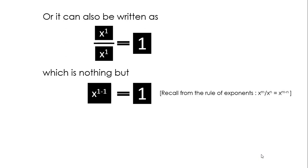Recall from the rule of exponents that x power m divided by x power n equals to x power m minus n. That is x power 0 equals to 1.